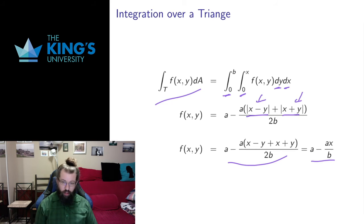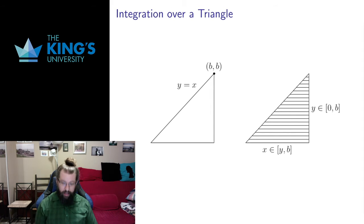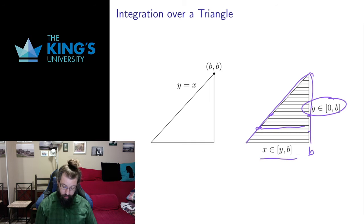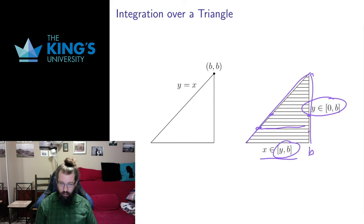This is not the only way to describe the triangle. I could instead choose constant bounds in y and variable bounds in x. If I do that, then for the bounds in x I have to start at the line y equals x — so if y is 1 I start at x equals 1, if y is 2 I start at x equals 2 — and then x goes all the way up to b. So the bounds in x are from y to b. It depends on which bound you choose as constant and which as variable. In this way we can describe a variety of shapes of sets to integrate over using variable bounds.